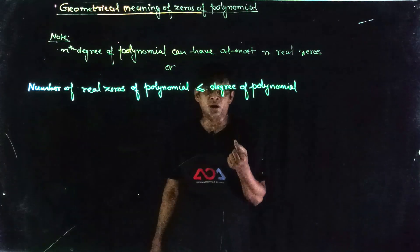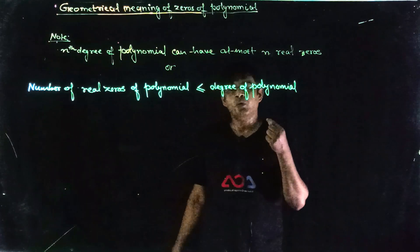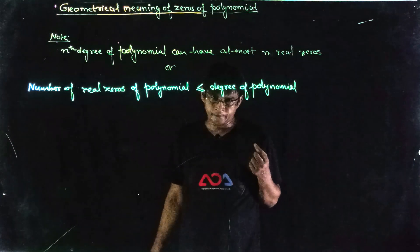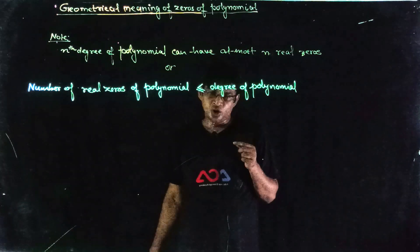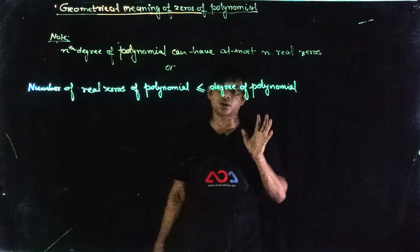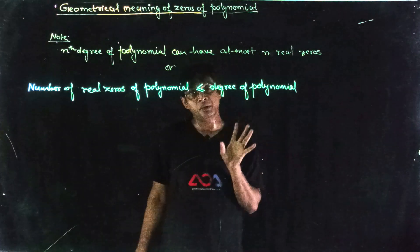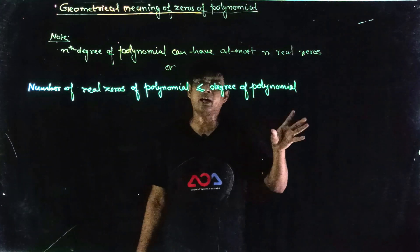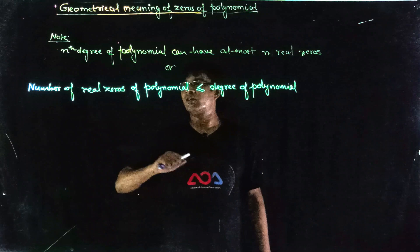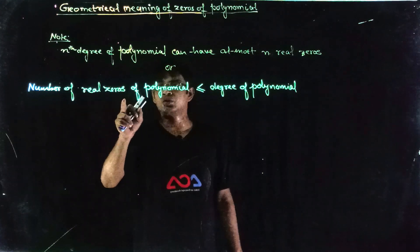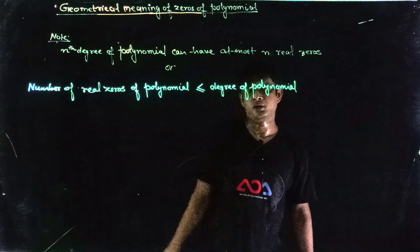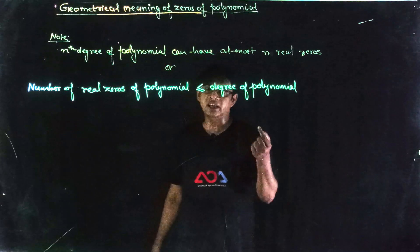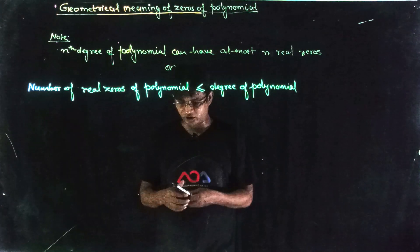Any nth degree polynomial that is given, its real zeros can be at most n. Suppose we have a polynomial of degree 5, so the real zeros of this polynomial can be maximum 5, not more than 5. Maximum real zeros can be 5, they can also be less. The number of real zeros of a polynomial is less than or equal to the degree of the polynomial. The real zeros will be equal to or less than its degree. Let's understand this geometrically.